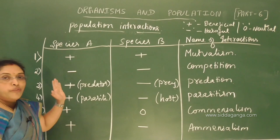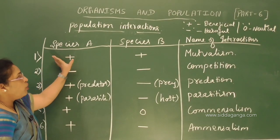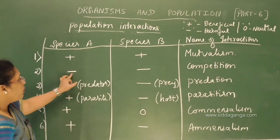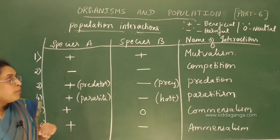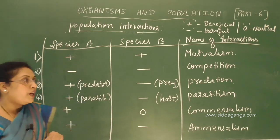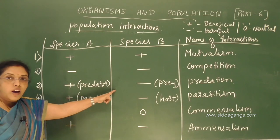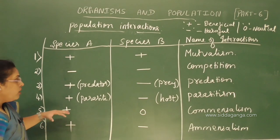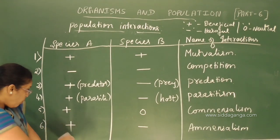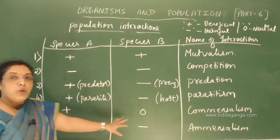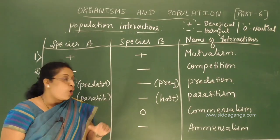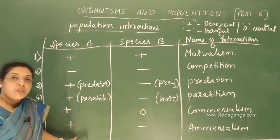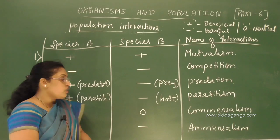This will come for three marks. When both species are benefited — mutualism. When both species are harmed — competition. One is benefited, other is harmed — predation and parasitism. In commensalism, one species is benefited, other is neither harmed nor benefited. In amensalism, one species is harmed, the other is neither harmed nor benefited.